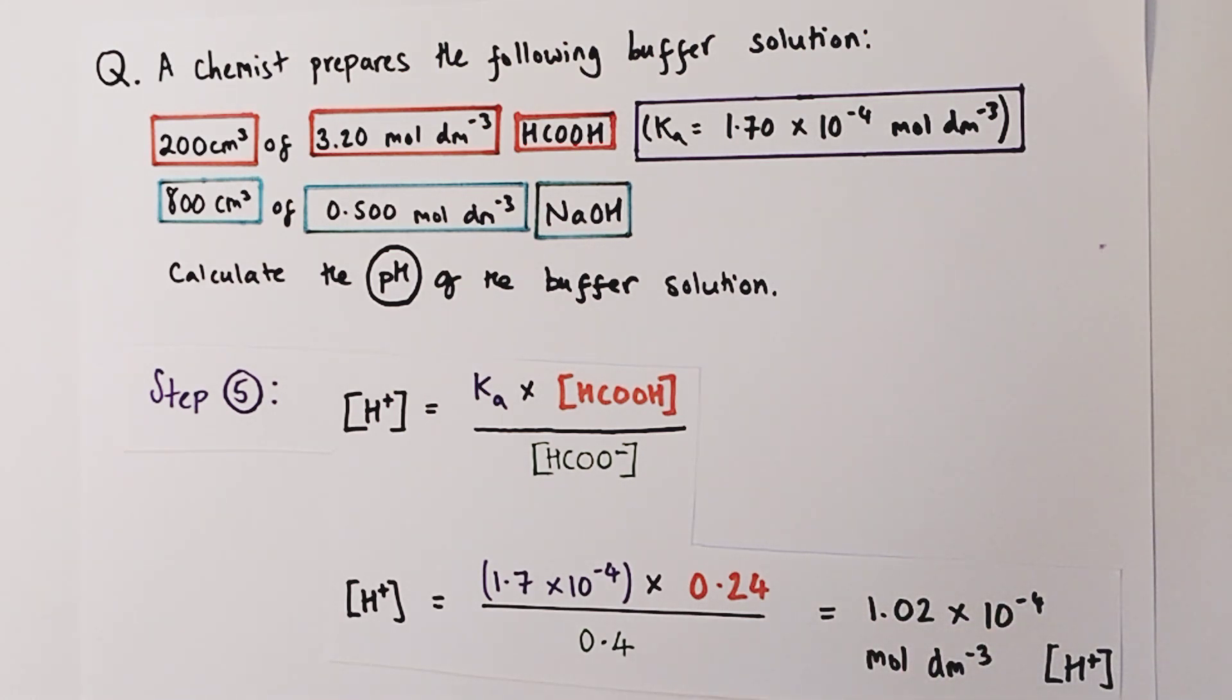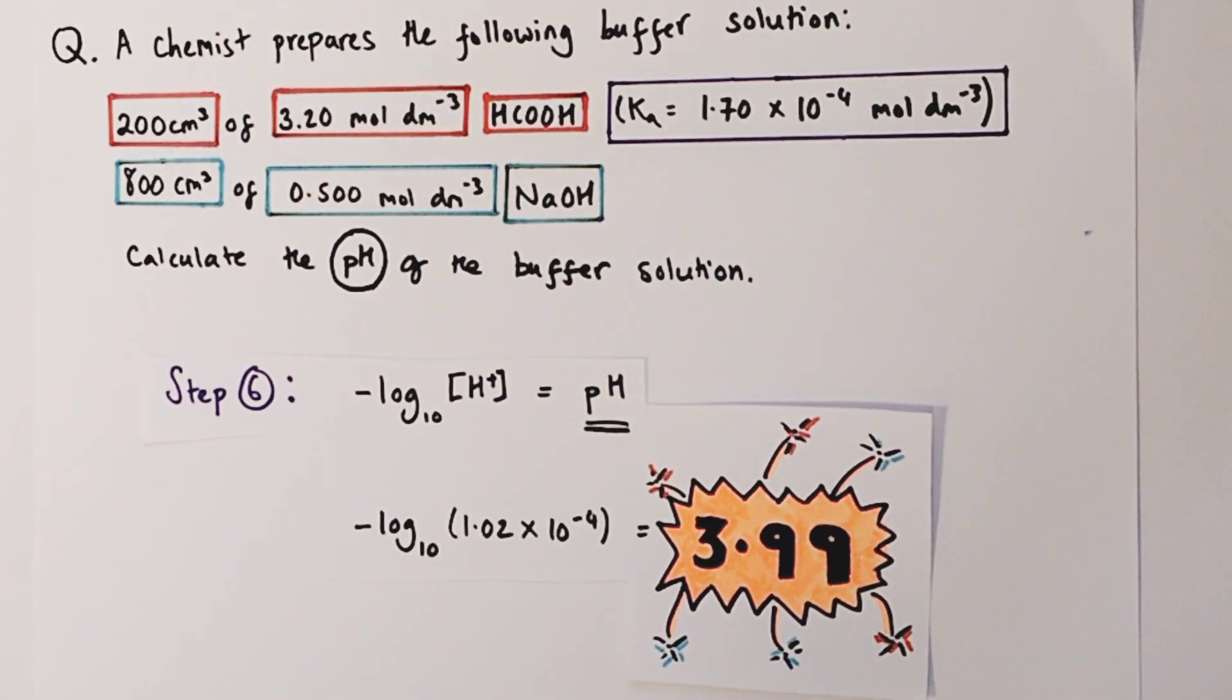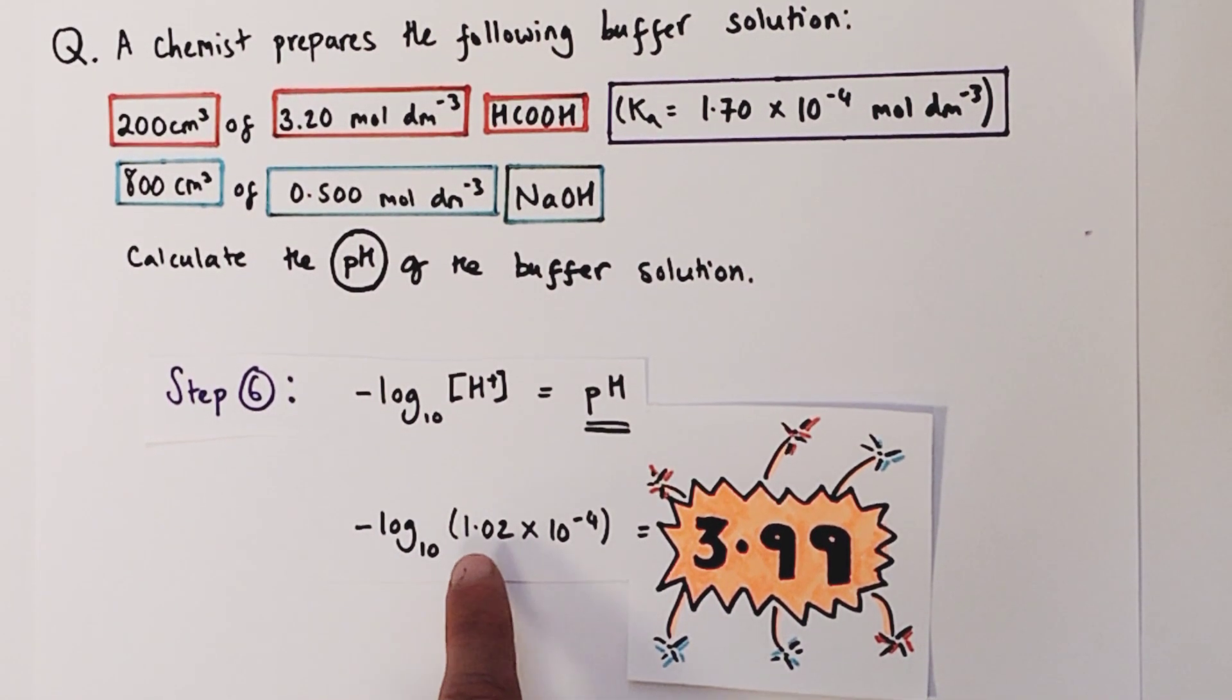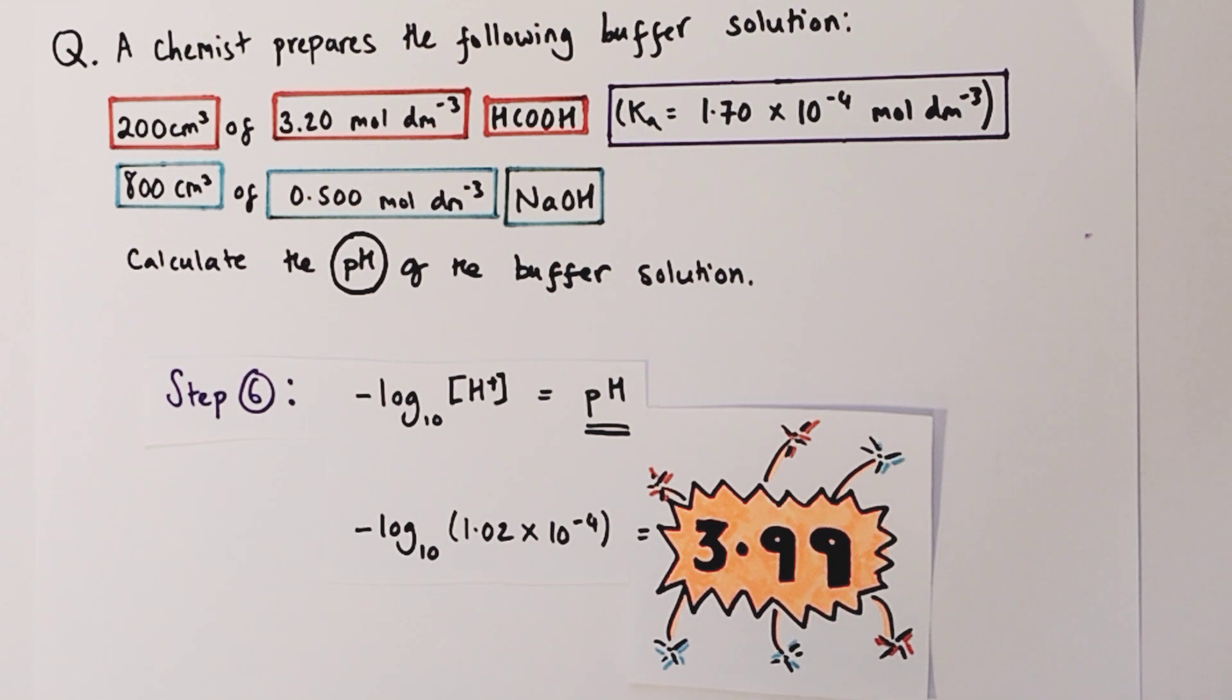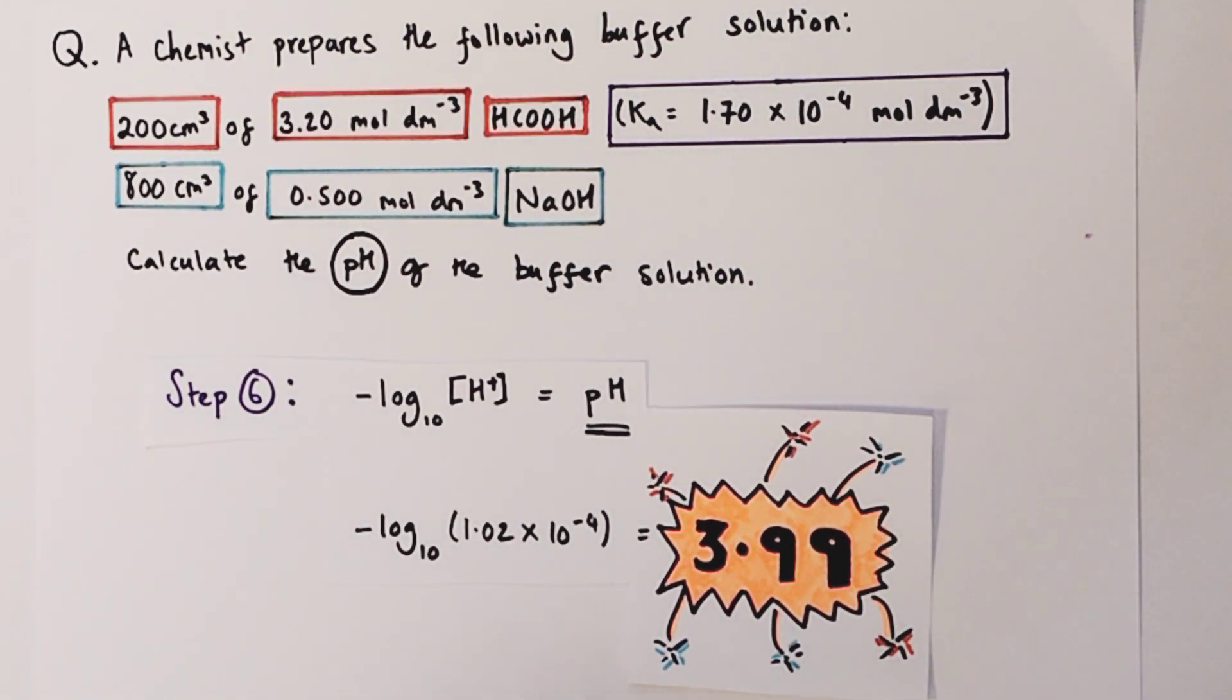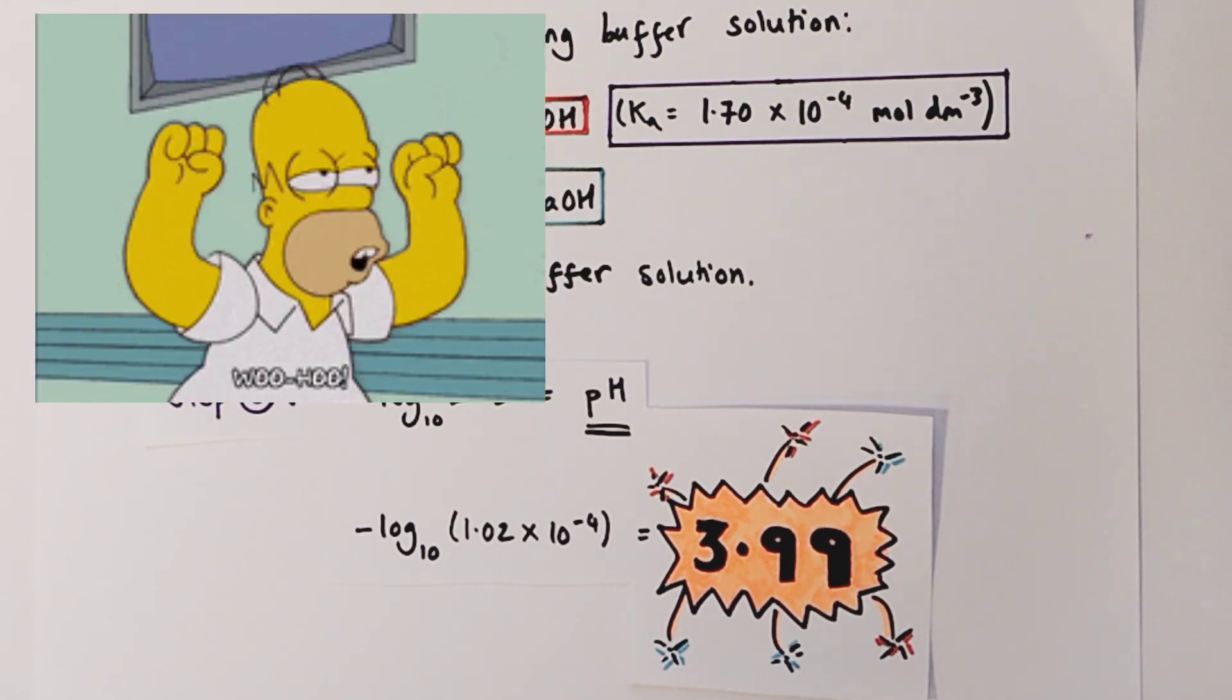Now we're ready to work out the pH of our buffer. pH is calculated by using the minus log to the base 10 of the hydrogen ion concentration. So minus log₁₀ of 1.02 × 10⁻⁴ gives us a pH of 3.99 to two decimal places, and that is the pH of this particular buffer solution. Congratulations guys, you've just completed a six mark A-level buffers calculation!